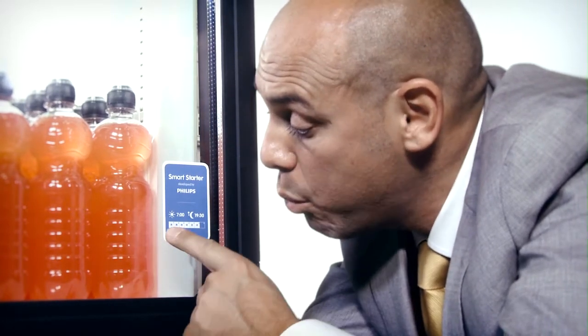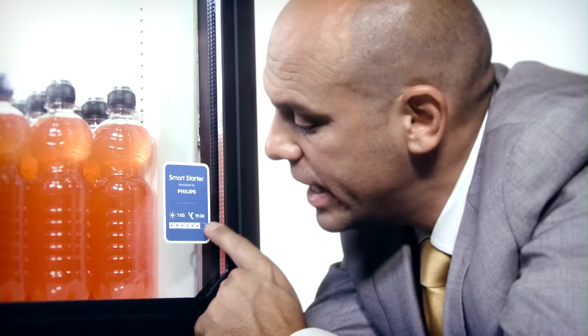Right below, you'll see days of the week, represented by numbers, with one being Monday and seven being Sunday. The Smart Starter will only switch the lamps on for the pre-programmed period of time on the days that have a sun icon.